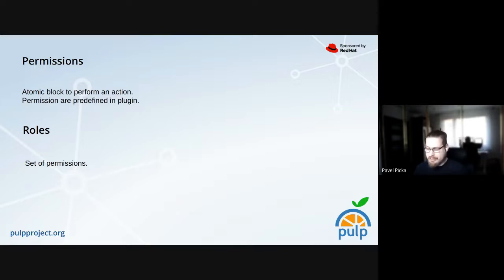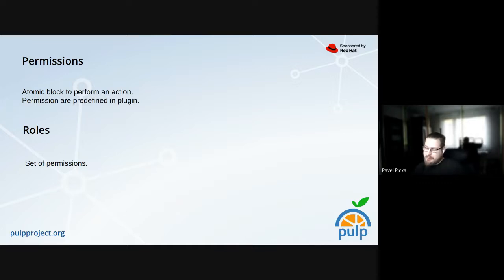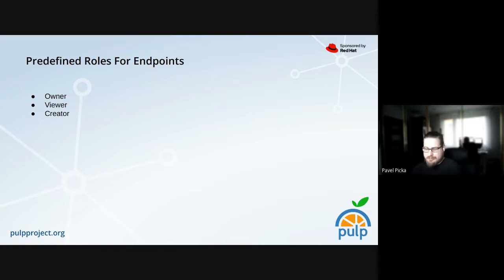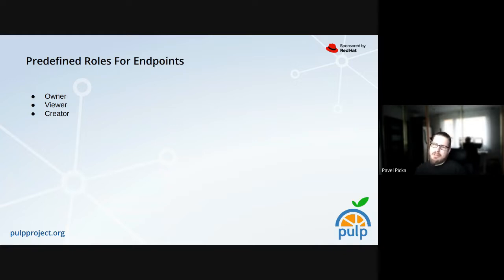The second term is the role, and it's basically a set of permissions. It's worth mentioning that roles can be assigned to a user or group — they can obtain the permissions or roles only via the API or from the CLI. There are some predefined roles which follow a basic pattern across all plugins that use RBAC within Pulp.